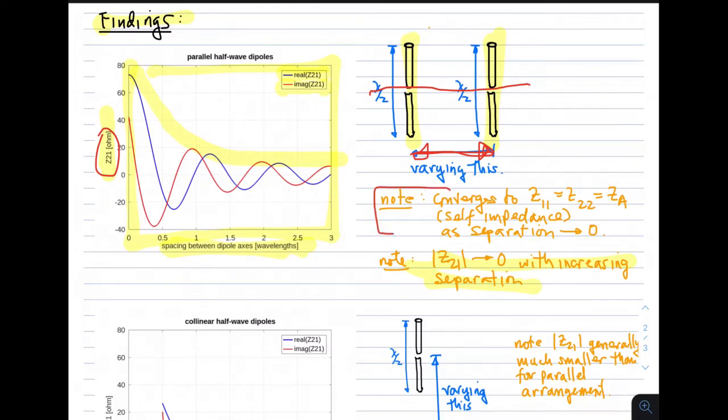Something else to note is that the result we have converges to the self-impedance of a single dipole when the separation goes to zero. As we decrease the separation and get to zero, that means the two dipoles are on top of each other. In that case, we see the real part is about 73 ohms, and the imaginary part is about 42.5 ohms, and that's the self-impedance of a thin dipole. This makes sense. We expect that the mutual impedance for two dipoles close to each other converges to the self-impedance of a single dipole, and that is, in fact, the case.